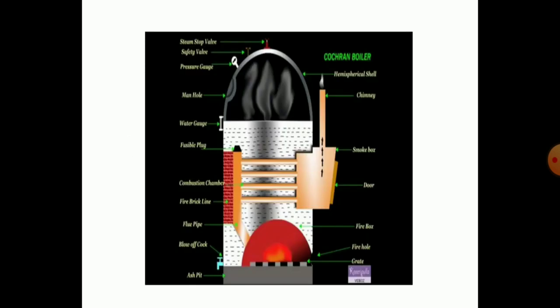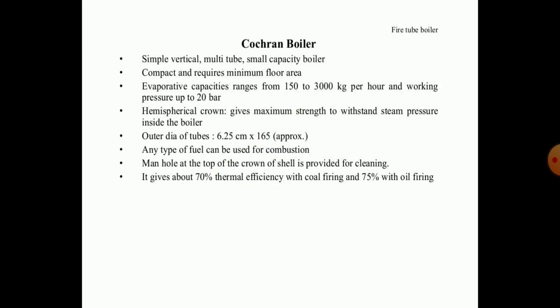Now we see the fire tube boiler. In front of your screen, a pictorial view of a fire tube boiler is shown, including the parts, tubes, chimney location, and cross-sectional area. At the top, the crown-shaped area contains the high pressure, high temperature steam. The Cochran boiler is simply a vertical, multi-tube, small capacity boiler which is compact and requires minimum floor area. It has an evaporative capacity ranging from 150 to 3000 kg per hour, while working pressure is up to 20 bar. The hemispherical crown gives maximum strength to withstand the steam pressure inside the boiler.